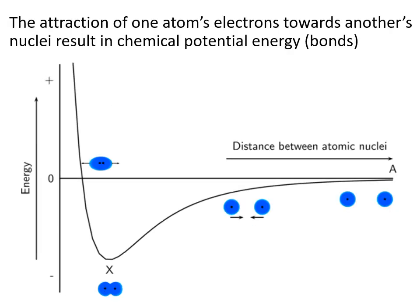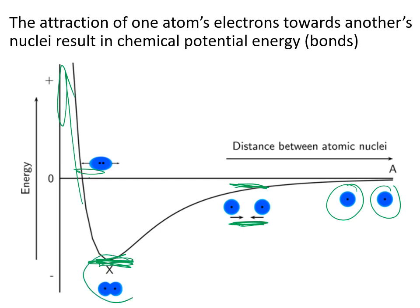When you have two atoms, they can be attracted to each other and end up sharing a bond. The energy associated with that bond gives the atoms a particular stability — they are more stable when bonded than when further apart. This is also why nuclear fusion is so difficult: if atoms get any closer than their optimal bond distance, the energy becomes far too high. So atoms can become stable by forming these bonds.